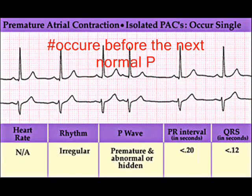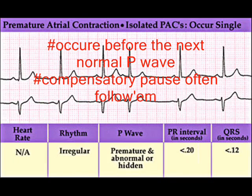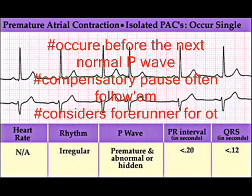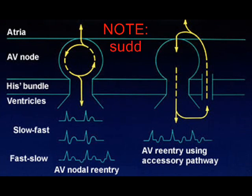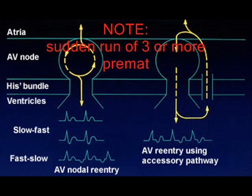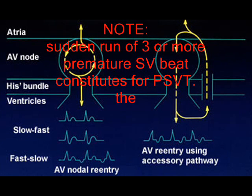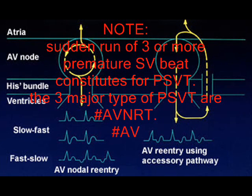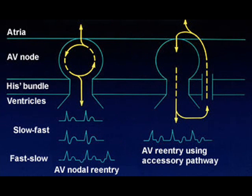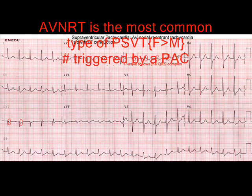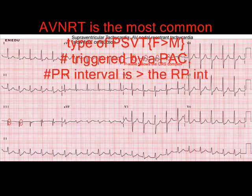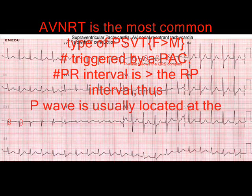PAC occurs before the next normal P wave with a compensatory pause following it and is considered a forerunner for other arrhythmias such as AVNRT. Note that a sudden run of three or more premature SVT beats is considered PSVT. We have three types of PSVT: AVNRT, AVRT, and unifocal AT. AVNRT is the most common type of PSVT, triggered by a PAC.